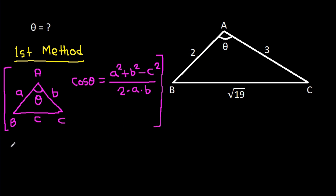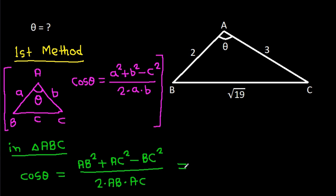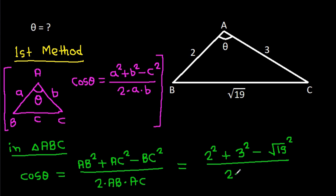So here, in triangle ABC, cos theta will be AB squared plus AC squared minus BC squared over 2 times AB times AC. AB is 2 squared plus AC is 3 squared minus BC is root 19 squared, over 2 times AB is 2 and AC is 3.